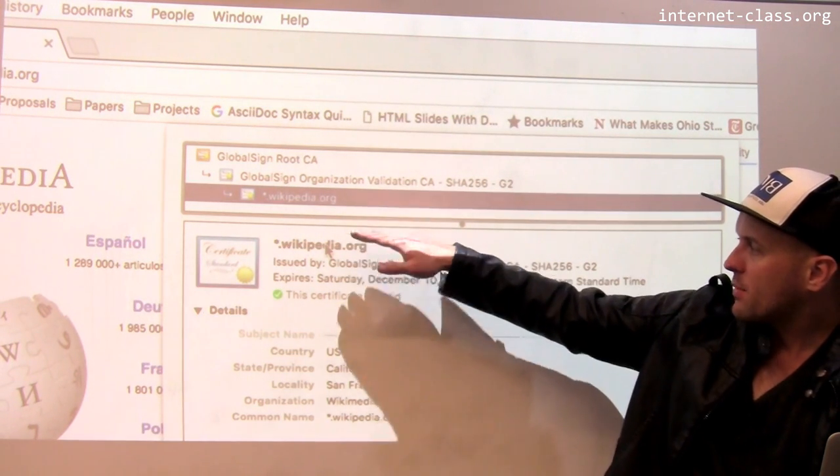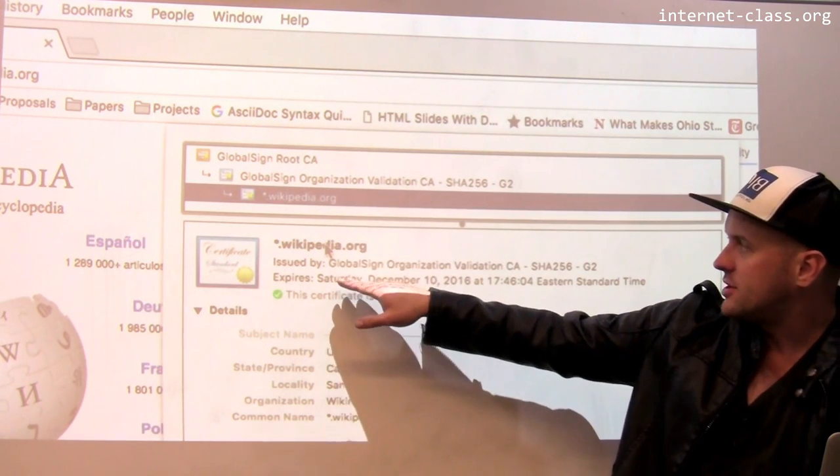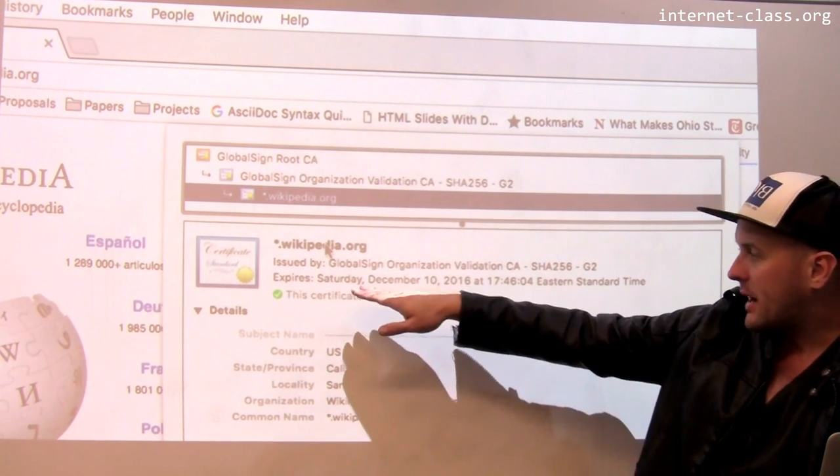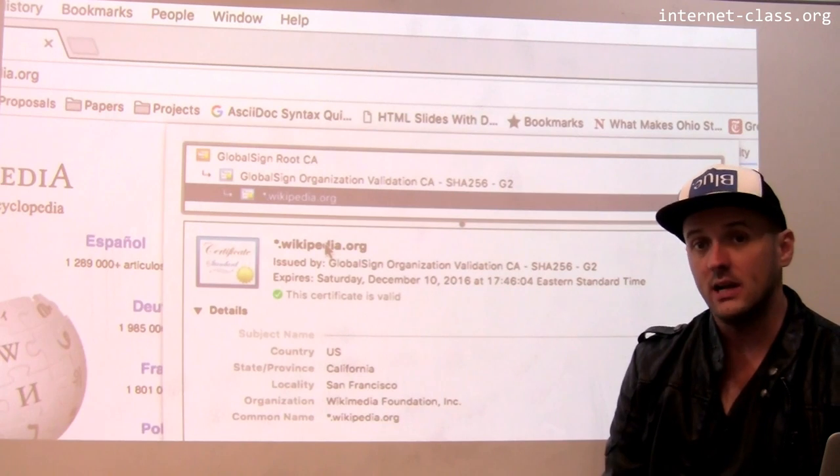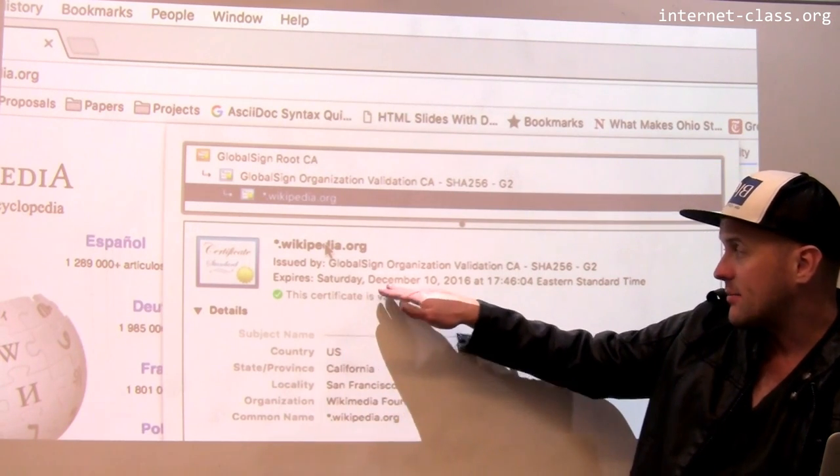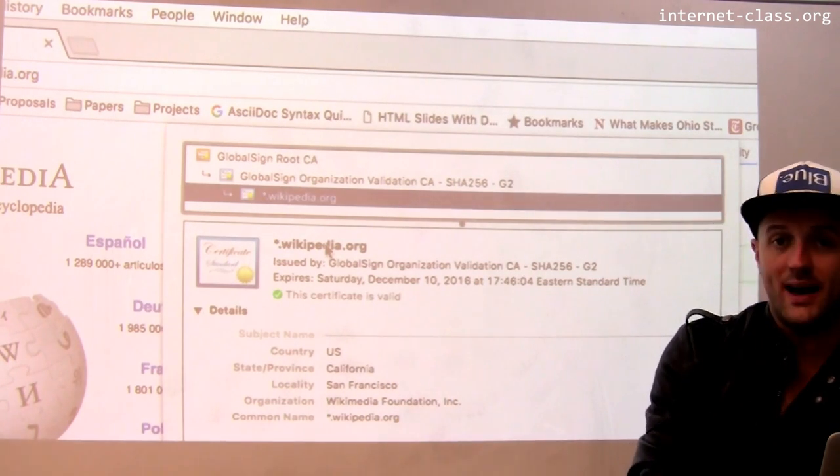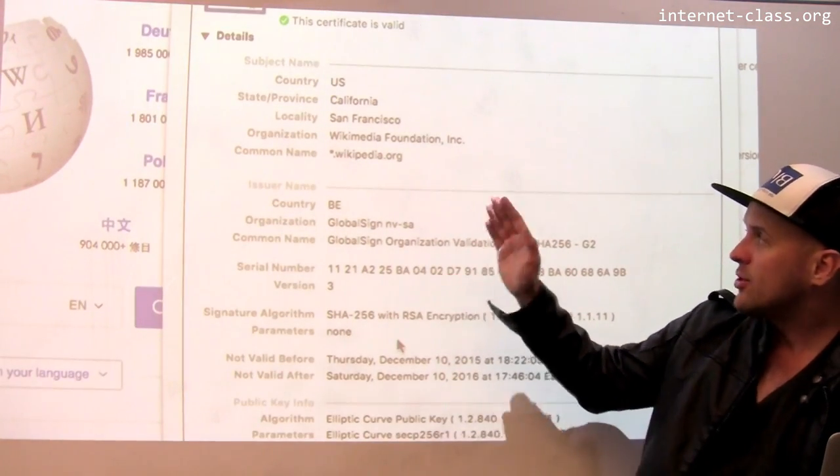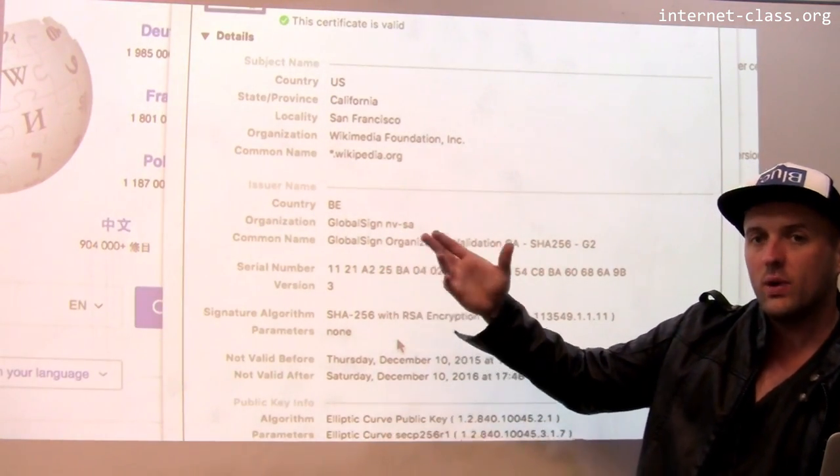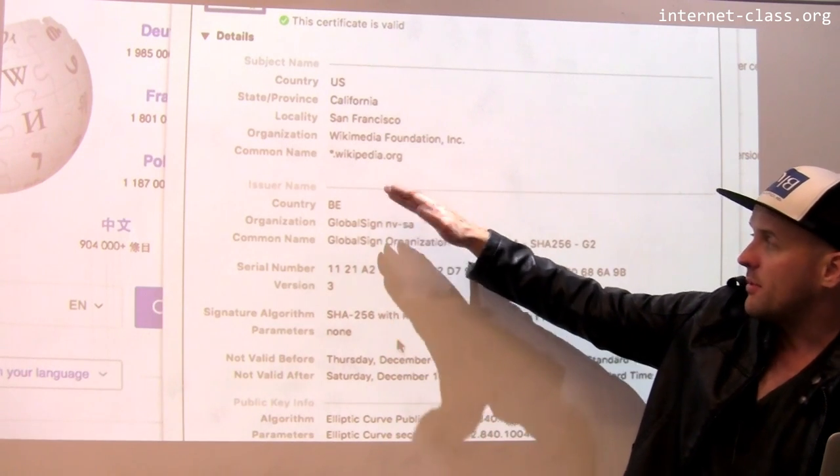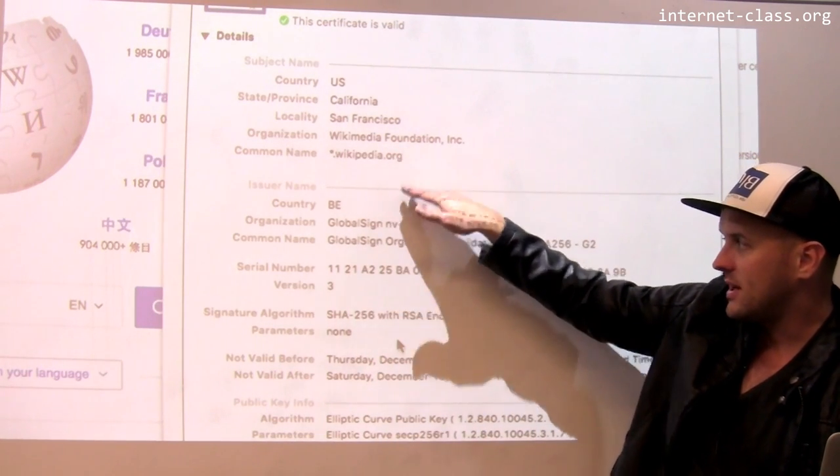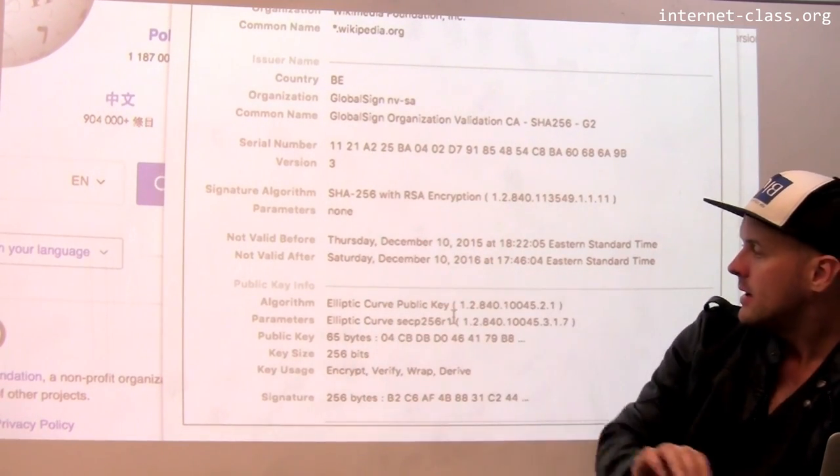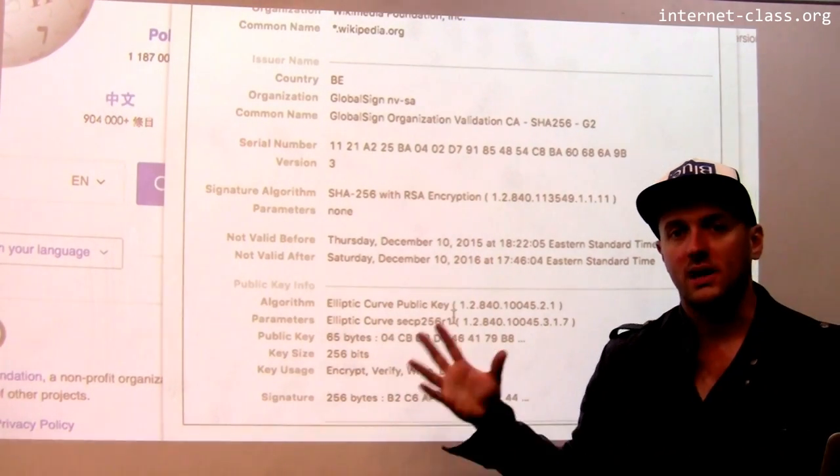And so what this says is this certificate was issued by Global Sign Organization Validation CA. It expires. Now certificates have an expiration date. This one expires Saturday, December 10th, so the certificate is valid still. And then it gives me some information about the company. So in order to sign the certificate, Wikipedia had to provide some information. The organization name is Wikimedia Foundation. It gives me some information about the issuer name and then some information about the public key itself.